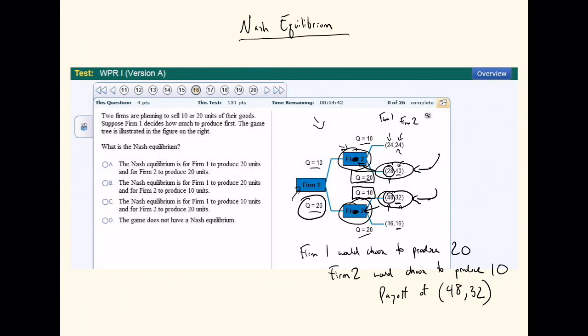So just to review what we did. And again, just looking over here at our answer key, the correct answer would be for firm one to produce 20 units and firm two produce 10. This would be our Nash equilibrium. So this was a sequential game. We just found a Nash equilibrium.